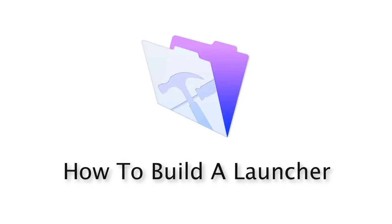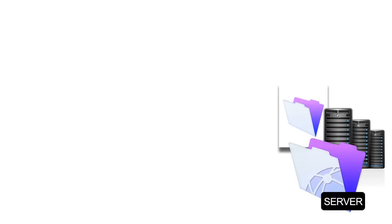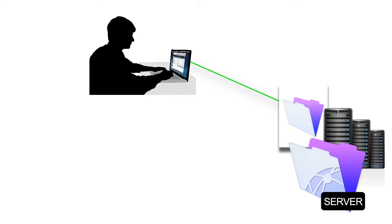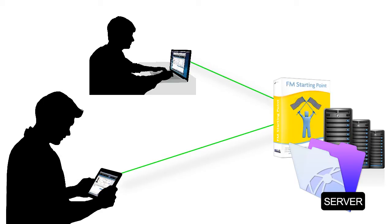In this video we're going to talk about building a launcher or opener file that people on your team can use to open a FileMaker file pretty much automatically. In other videos we've talked about setting up your FileMaker file to be shared on the network or the internet by a FileMaker server, so your team can access the same FileMaker database and collaborate at the same time. So once you have your database up on a FileMaker server, how do you access it?